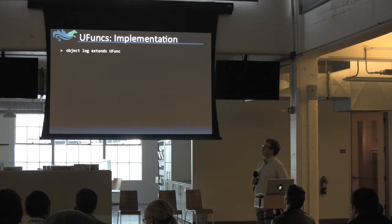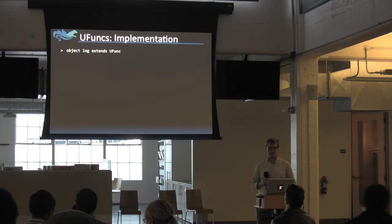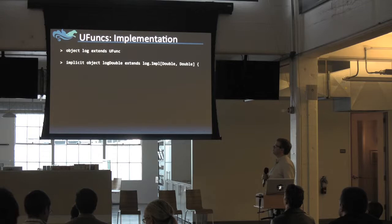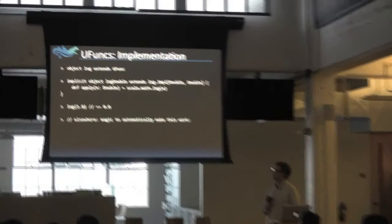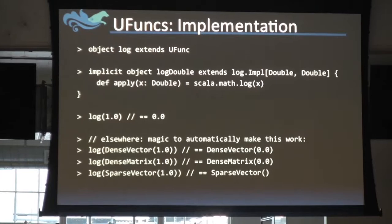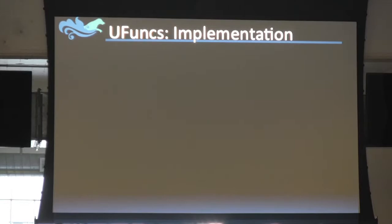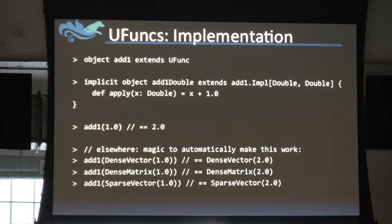The way ufuncs work is using Scala's implicit parameter infrastructure. Log extends a trait called UFunc, and you can provide implementations by implementing an implicit that's a member type of the log object. Here's how we could implement log — and as soon as we do that, it'll work for dense vectors, dense matrices, sparse vectors, arrays, and everything else automatically for all the built-in types. Adding your own works the same simple way.